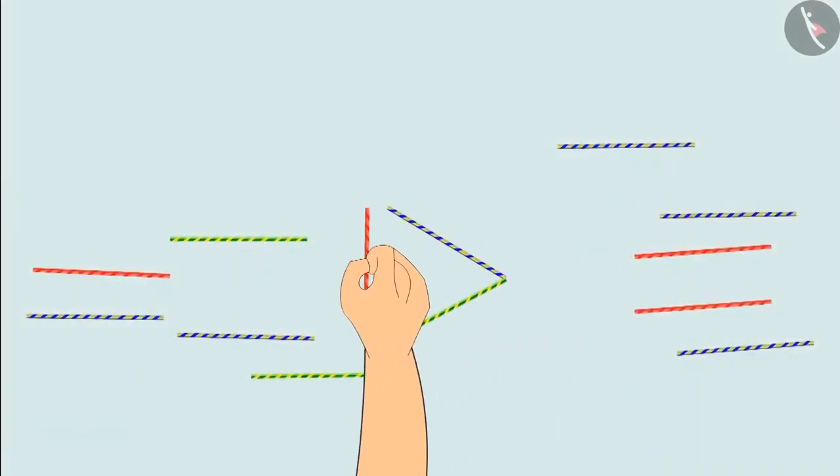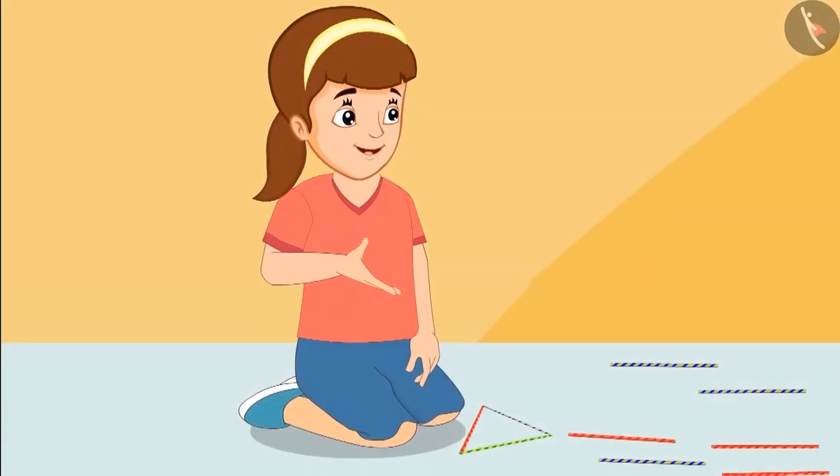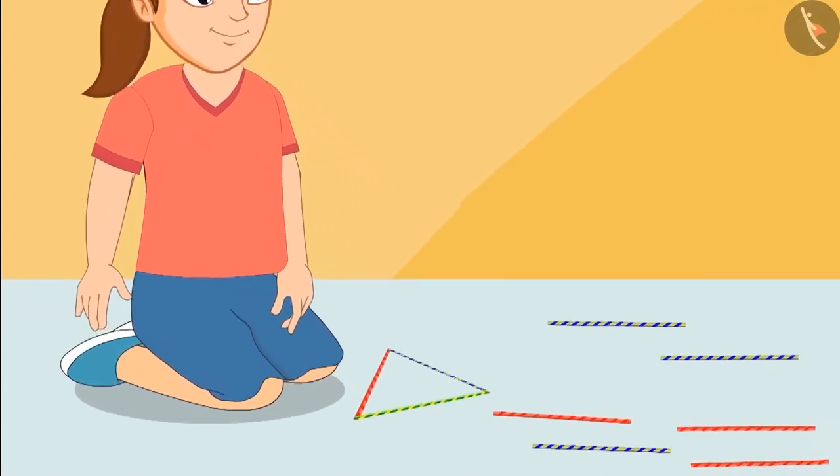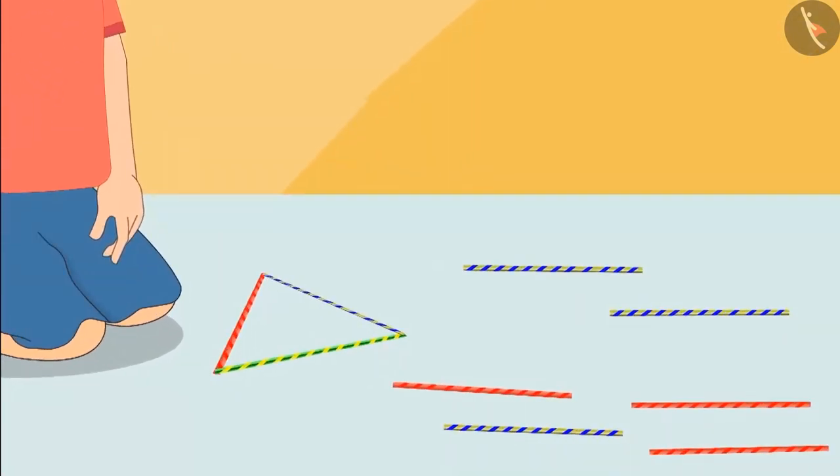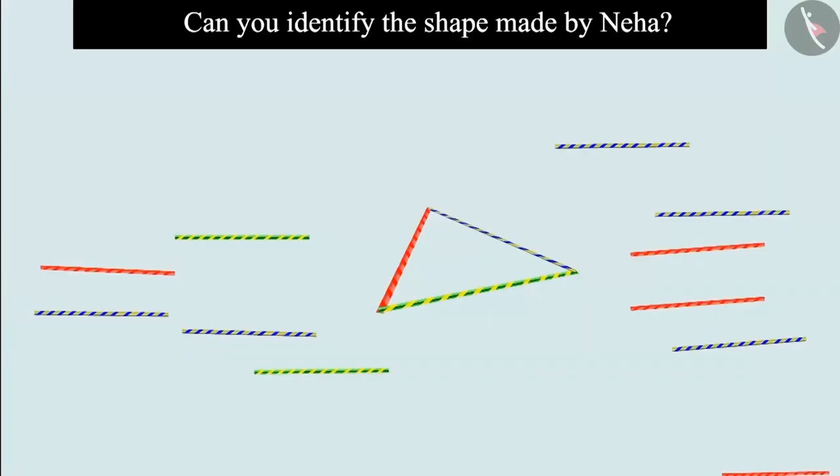Neha, what are you making? Chotu, I have made a shape out of three straws. Can you identify the shape I made? Children, do you know which shape Neha has made? Come on, let's see.